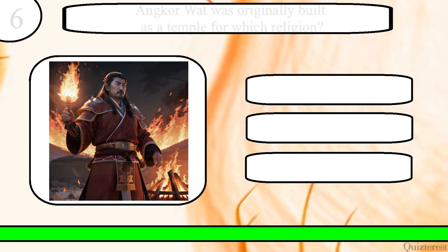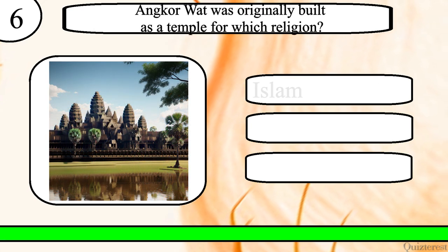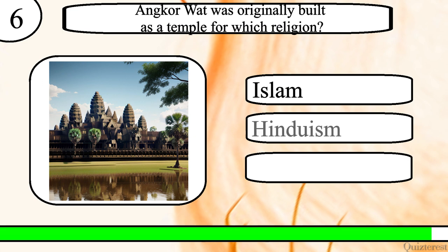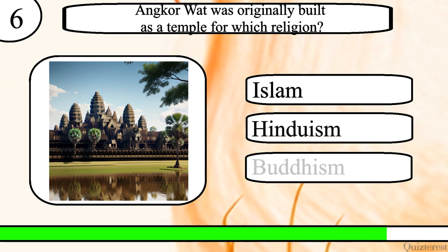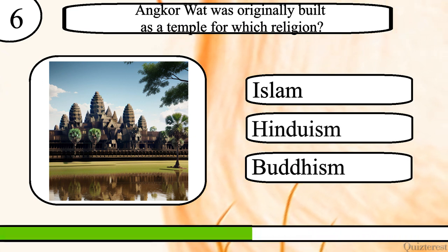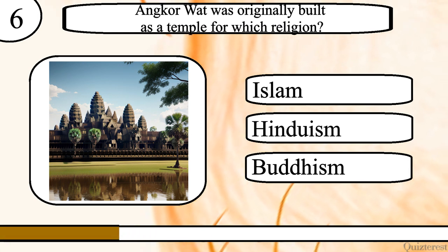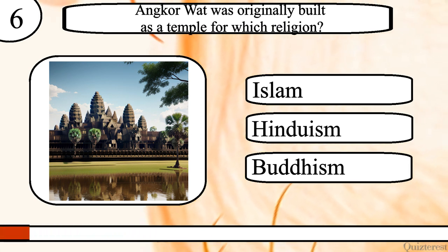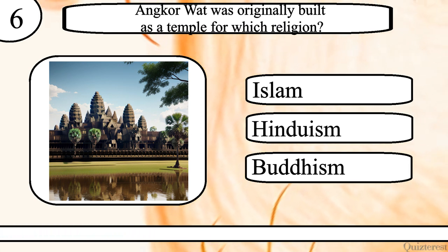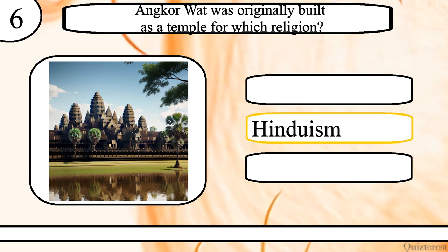Question 6. What was Angkor Wat originally built as a temple for which religion? Islam, Hinduism or Buddhism? The correct answer is Hinduism.